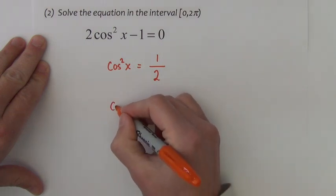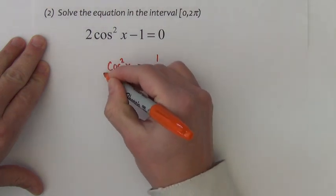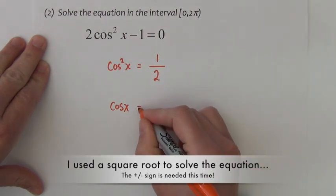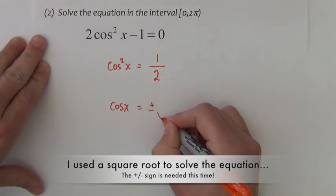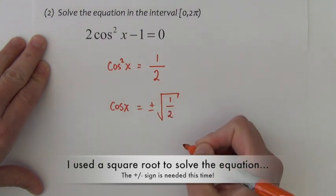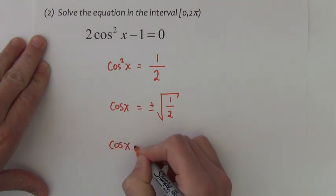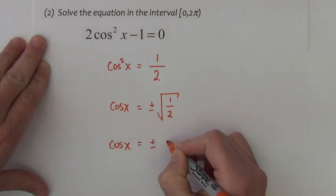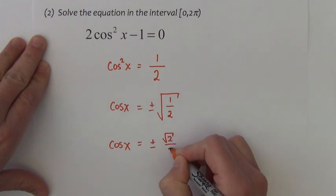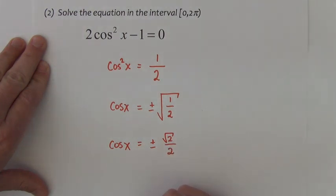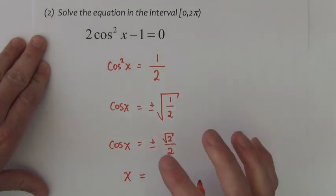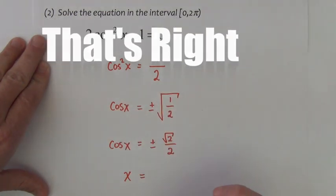I can get cosine by itself if I take the square root of both sides, which equals plus and minus square root of 1 half. Simplifying square root of 1 half, cosine x equals plus or minus square root of 2 over 2. We want all the places where cosine equals positive or negative square root of 2 over 2. There are 4 such angles.